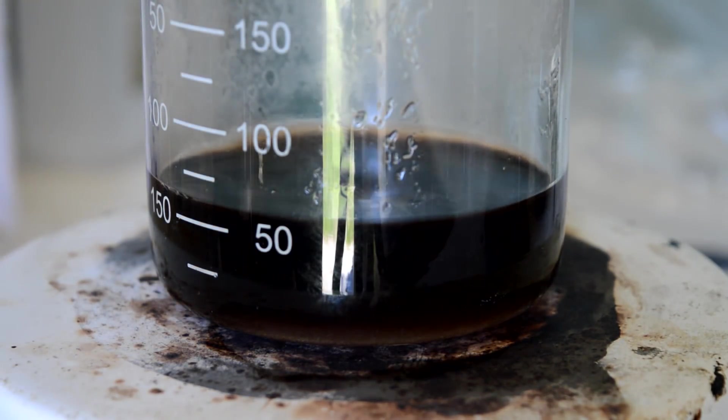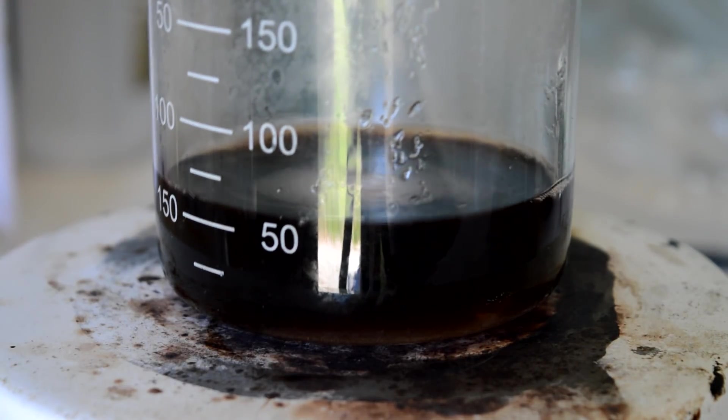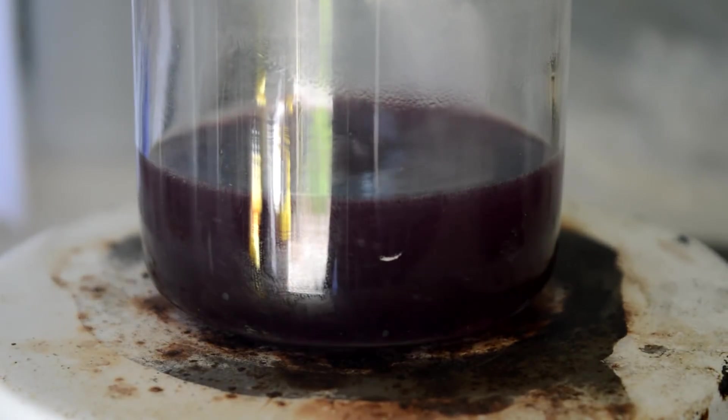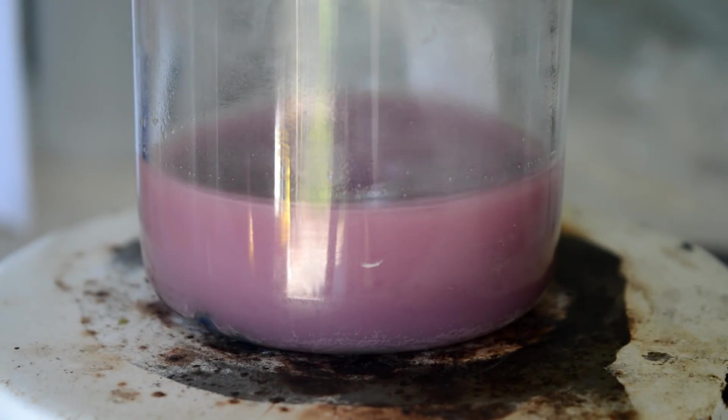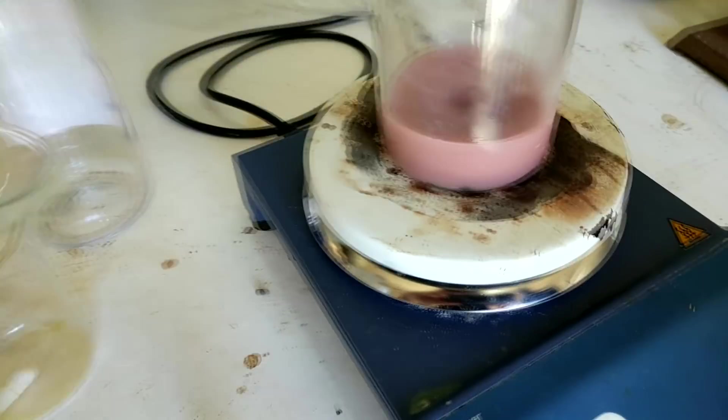I'm going to add some potassium hydroxide to it, and at some point, we should see all the cobalt oxalate precipitate out. We've done it. Finally! Look, it's a pink precipitate. It's actually cobalt oxalate. We've done it.